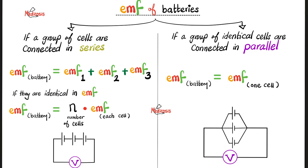If all of your electric cells are identical, for example, 1.5 volts, 1.5 volts, and 1.5 volts, you can simply simplify this. The electromotive force for the entire battery equals the number of cells multiplied by the electromotive force of each electrical cell.